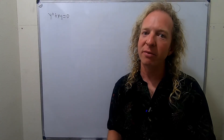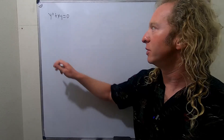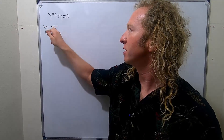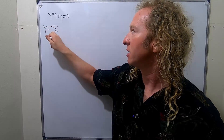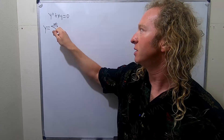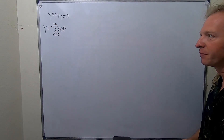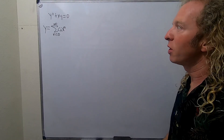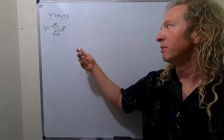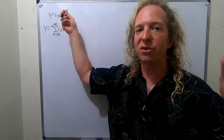The very first step in this problem is to start by letting y be equal to an infinite series. So we let y equal the infinite sum as n runs from 0 to infinity of c_n times x to the n. That's the first step always. The next thing you want to do is take as many derivatives as you need, because you basically want to take this and plug it into your DE.